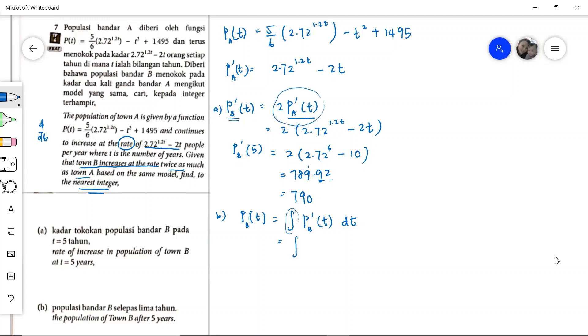P'_B(T) we can replace with 2P'_A(T), so we take out the 2. We differentiate P and integrate again, so we get back P. It's twice the population of town A.